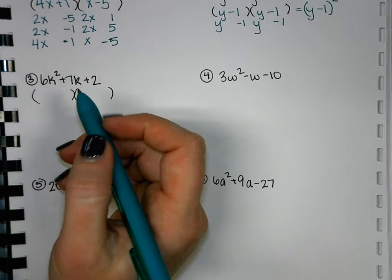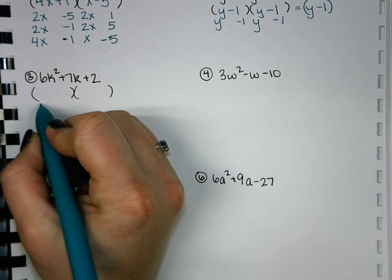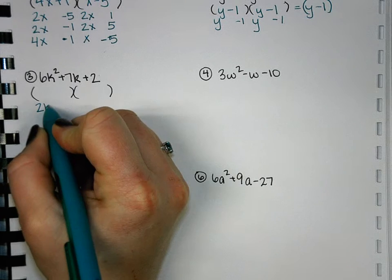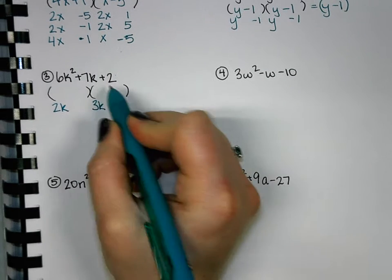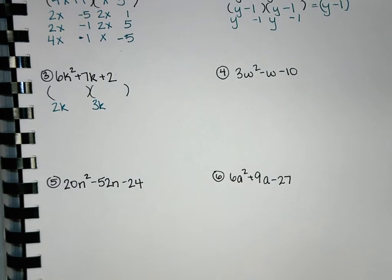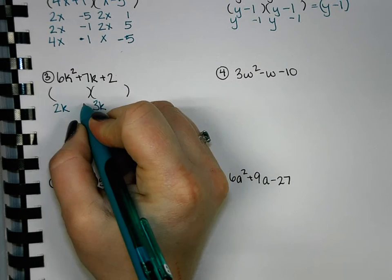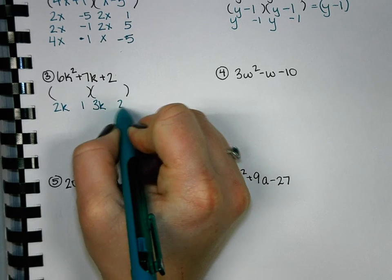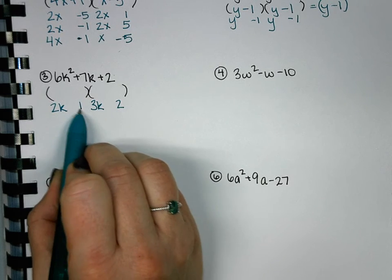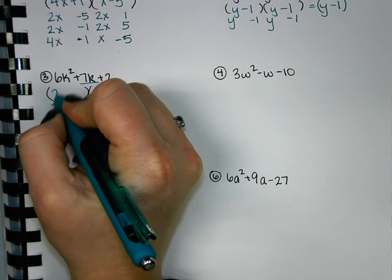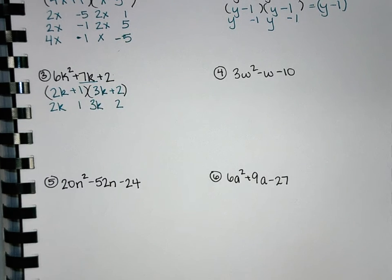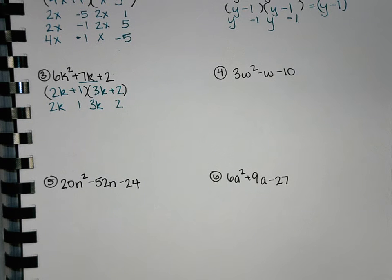So what are some things that multiply to 6k²? 2k and 3k. What are some things that multiply to 2? 1 and 2. Any particular spots you want the 1 and the 2? 1 first, 2 second. So we have 4k and 3k gets us our 7k. Is anyone able to start doing some of this in your head, like following the patterns? If not, that's okay. We can still list them out and write it. There's nothing wrong with that.